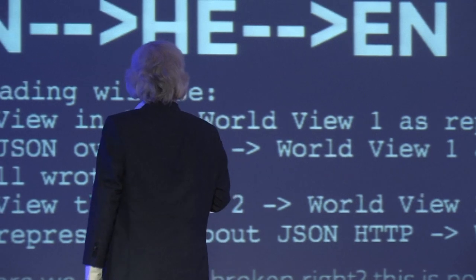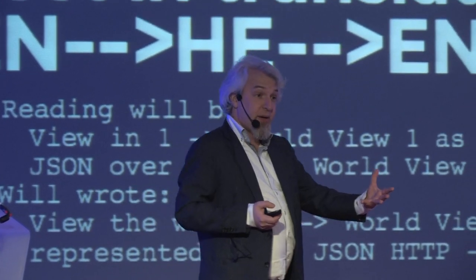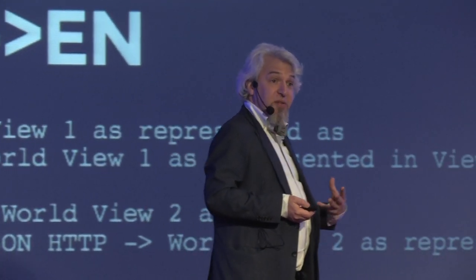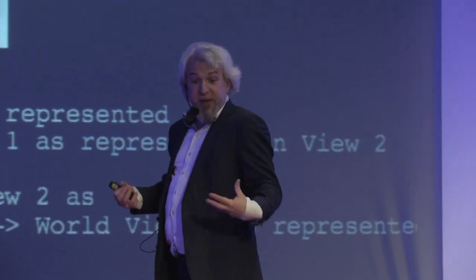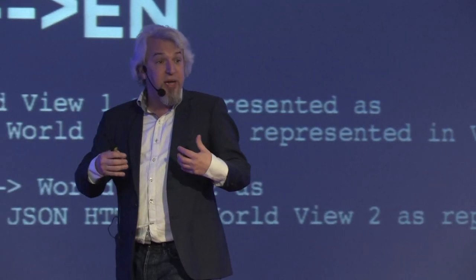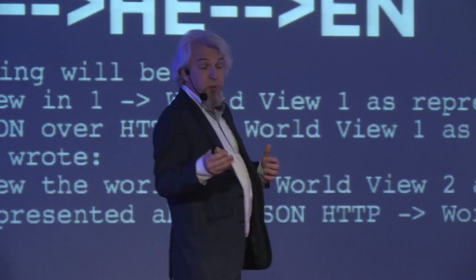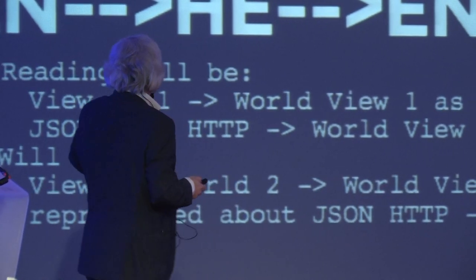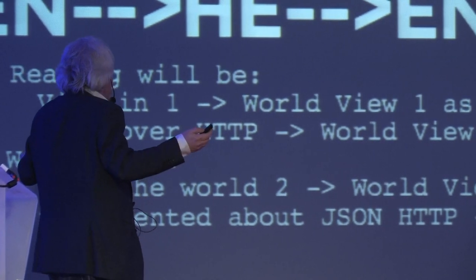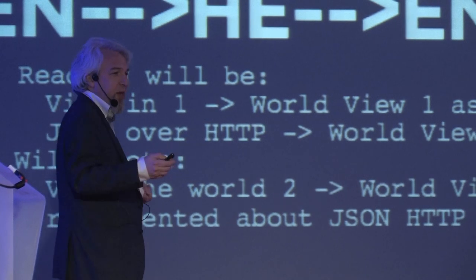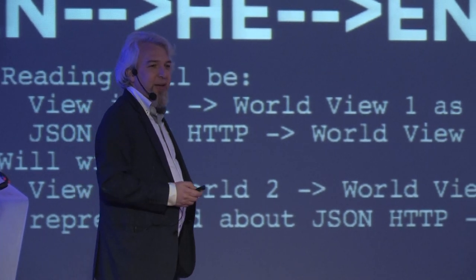I'll do the same trick now with Hebrew. I didn't show you the Yiddish or Hebrew representation because when you're using an API, you never see basically the intermediate representation — its semantics are something you consider to be transparent. And in Hebrew, this will be: reading will be view one, worldview one as represented as JSON over HTTP — and we're basically kind of messed up.